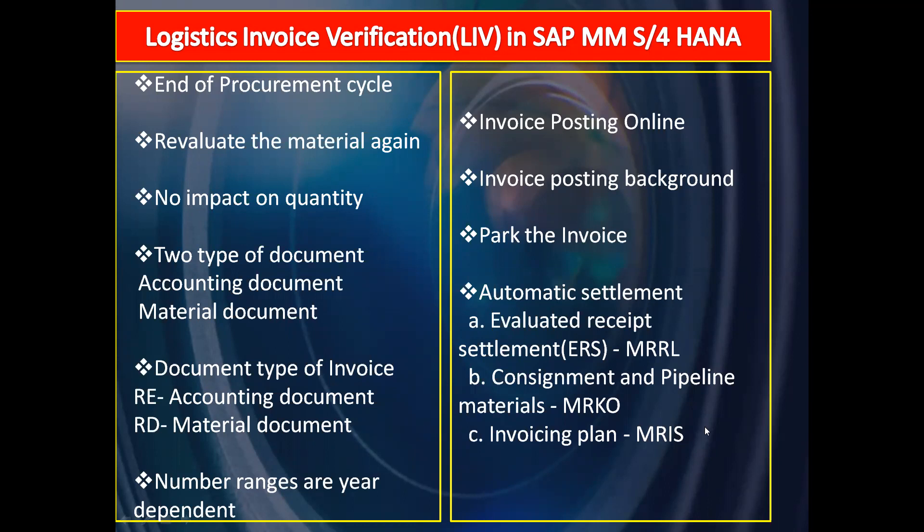So when we started the procurement cycle, if you remember, the first step was purchase requisition. Once purchase requisition is created, then we saw how the purchase order will be created with reference to purchase requisition. Once purchase order is created, it will be sent to the supplier, then the supplier will deliver the material. And then we saw how to do the goods receipt with reference to the purchase order. After doing goods receipt, the next step is logistics invoice verification.